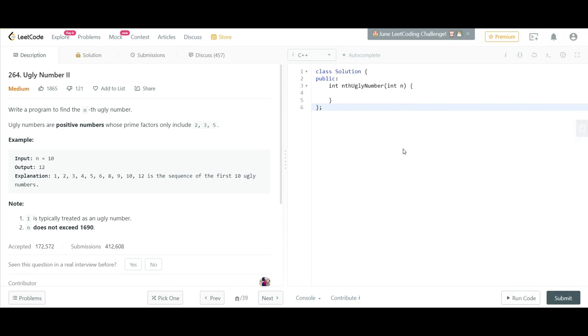Welcome back guys, so today I will be discussing the 264th problem of LeetCode, that is Ugly Number 2. The problem statement is we need to write a program to find the nth ugly number. Ugly numbers are positive numbers whose prime factors only include 2, 3, and 5. The example they have given is n equals 10.